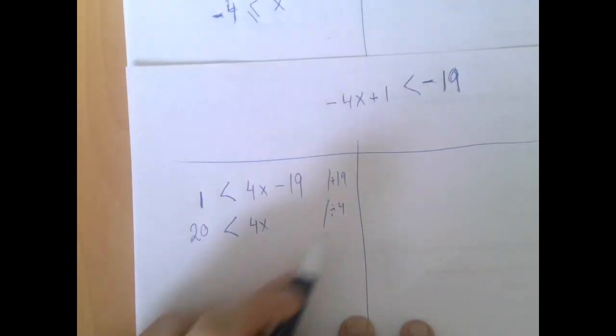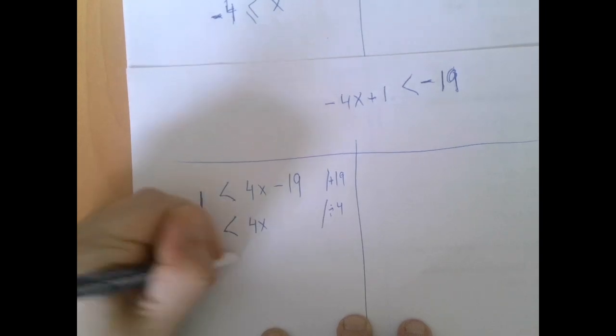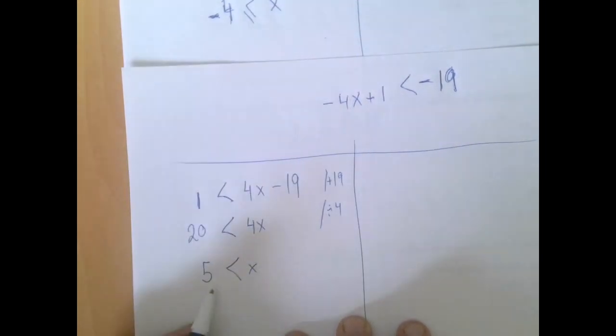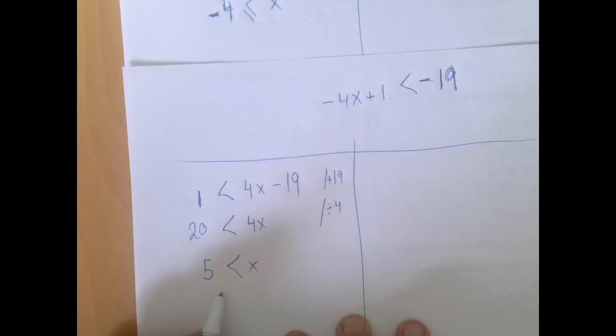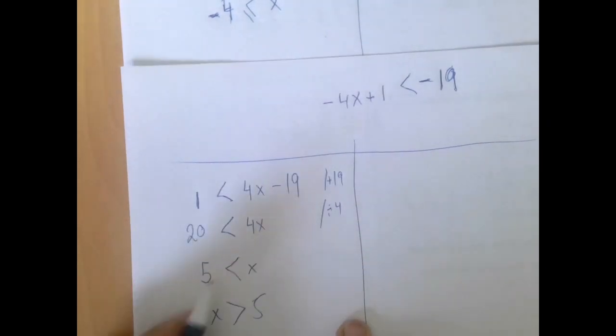After a while, when it's this simple, you don't even have to write this stuff. So we divide by 4. 5 is less than X. So X has to be greater than 5. This is more familiar but it's the same connection.